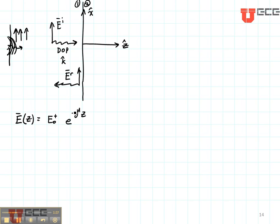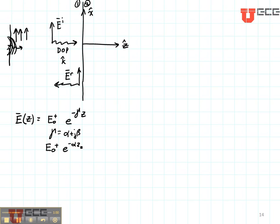Because it's going in the positive Z direction, we put a negative here in front of the gamma. Gamma is equal to alpha plus J beta, so we end up with E zero plus times E to the minus alpha Z, E to the minus J beta Z. This is our incident field.